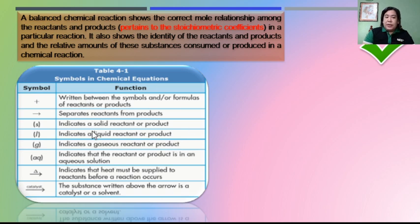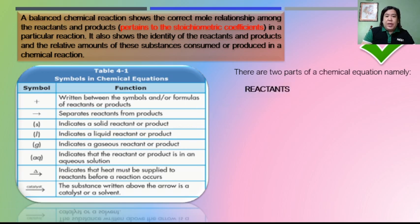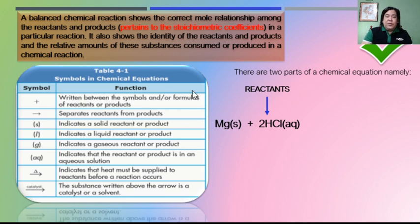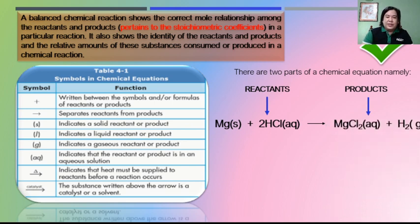These are the different symbols used in balancing chemical equations — you can read their descriptions on screen. We have the plus sign, the arrow sign, and the S, L, G, and AQ state symbols. In a chemical reaction, there are two parts: the reactants, found on the left side of the equation, and the products, located on the right side of the equation.